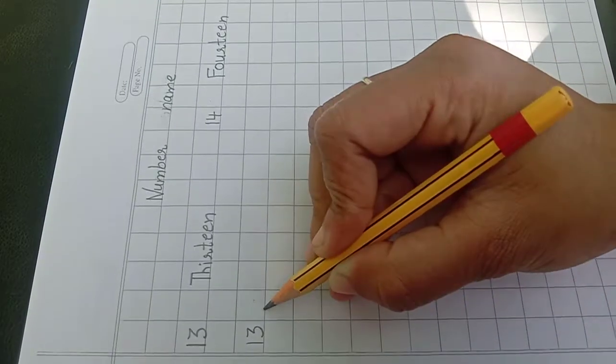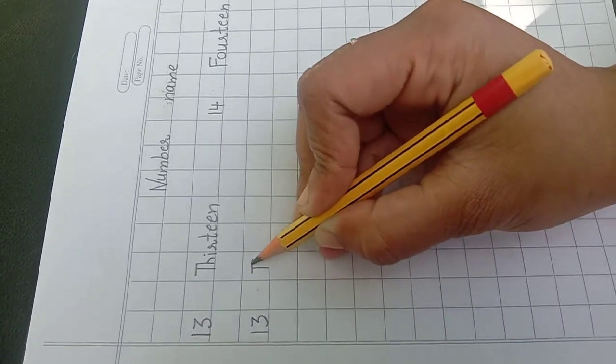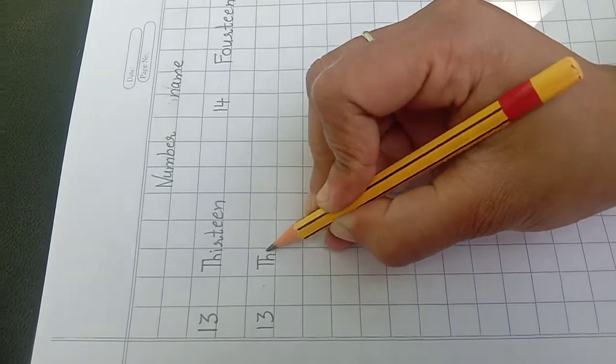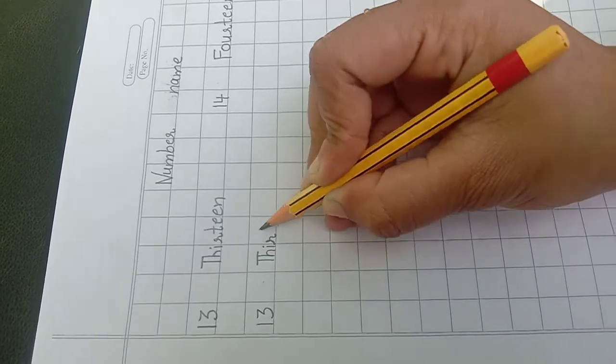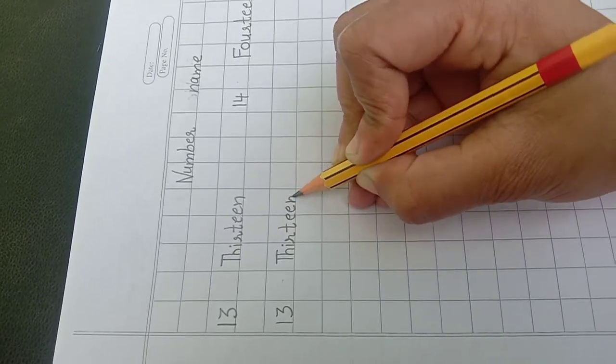Write 13, leave one box, then spelling of 13: T-H-I-R-T-E-E-N. 13.